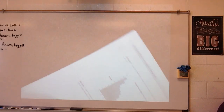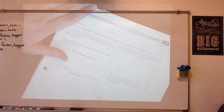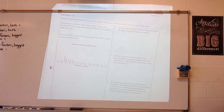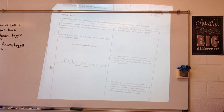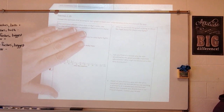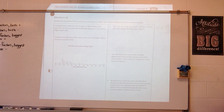Let's look at our questions. Answer the questions that accompany each graph to begin your understanding of the story behind the data. Transportation officials collect data on flight delays — the number of minutes past the scheduled departure time that a flight takes off. Consider the dot plot of the delay times for 60 Big Air flights during December 2012. What do you think this graph is telling us about the flight delays for these 60 flights?